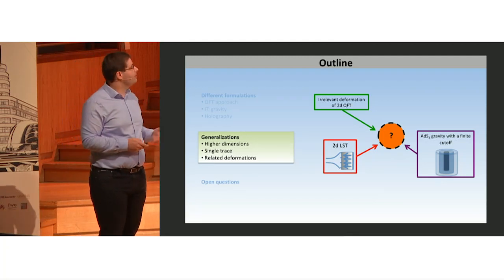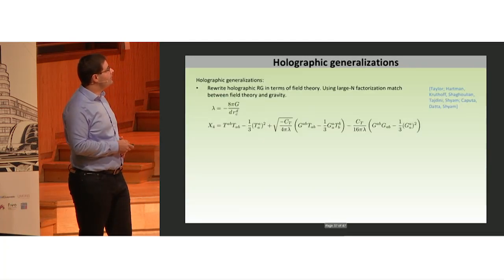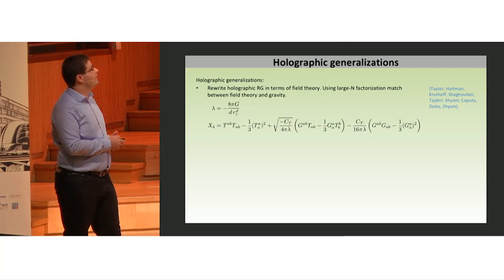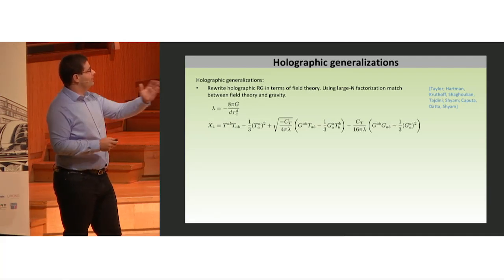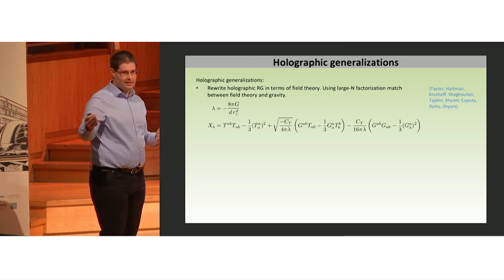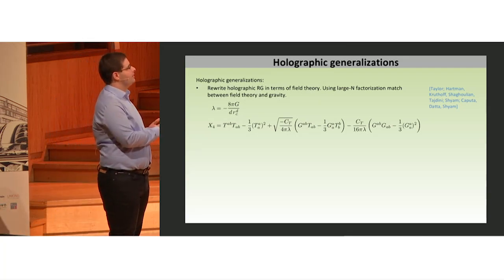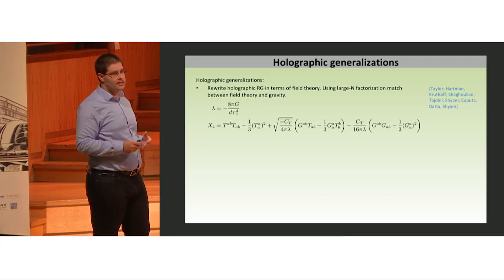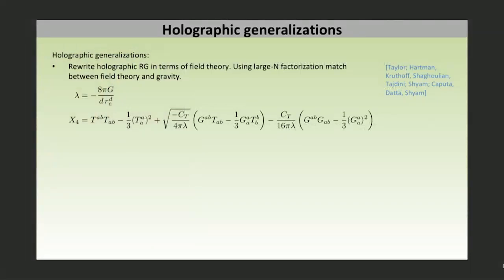Let me now discuss some generalizations. The holographic RG story can be generalized to higher dimensions. We get negative lambda again in higher dimensions. In four dimensions, for example, we get a TT-bar-like operator, but then, as in the scalar story, we get terms that are non-linear in the sources. For example, here GAB is the boundary Einstein tensor.